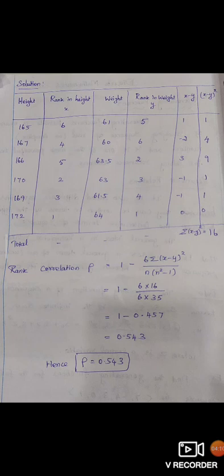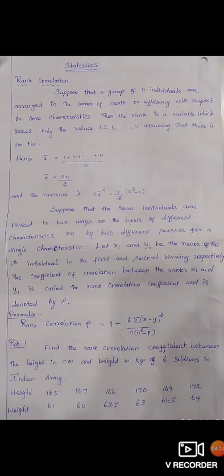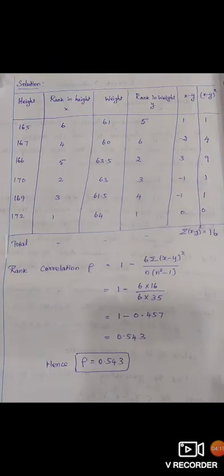So 6×16 divided by, here N value is nothing but 6 soldiers. In the question they given 6 soldiers in Indian army. So that is the N value.